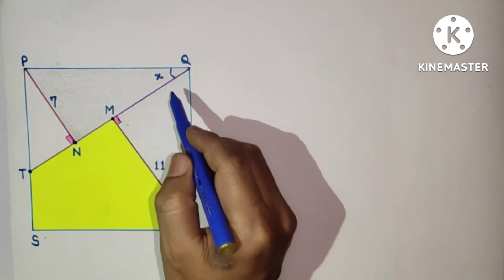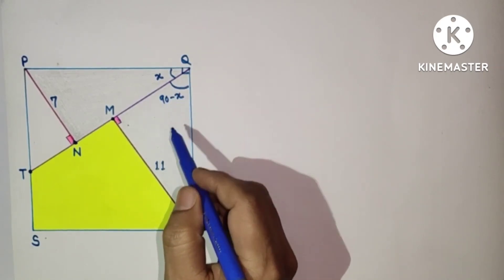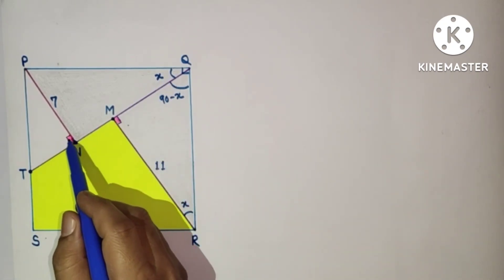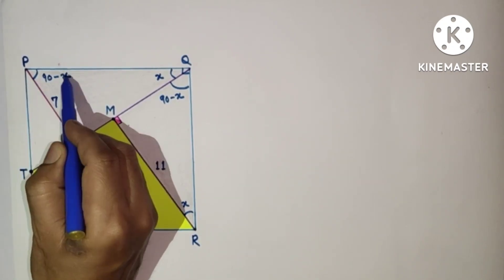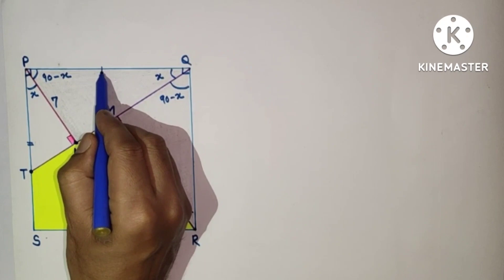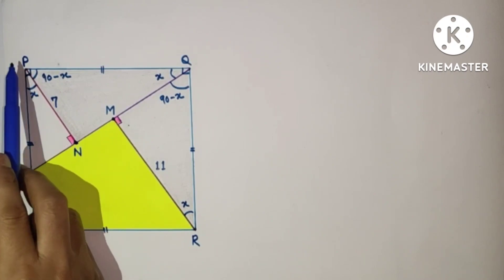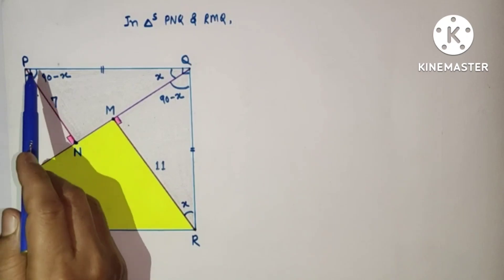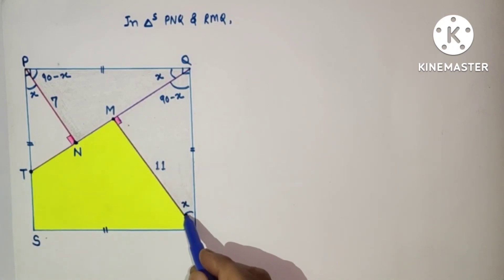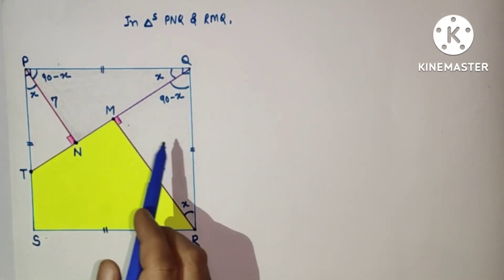If this angle is x, this angle will be 90 minus x, as this is 90 degrees. And if this is 90 minus x and this is 90, then this will be x. If this is x and this is 90, this will also be 90 minus x. All four sides of a square are equal. Considering triangles PNQ and RMQ: angle 90 minus x equals angle 90 minus x, this angle is 90, this angle is x, and PQ side equals QR side. So these two triangles are congruent.